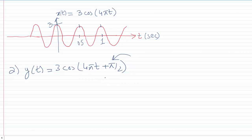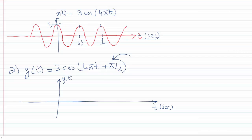There are several ways to plot this waveform. I'm going to use the approach I find least time-consuming. First, plot the x-axis and y-axis. Whenever you're given a waveform with a phase shift, ignore the phase shift first — ignore it altogether — and plot the rest of the waveform, which is 3cos(4πt). Luckily we already have that waveform, so I'll use it to plot y(t).